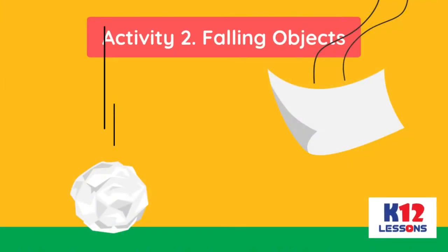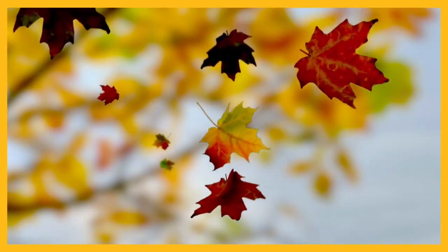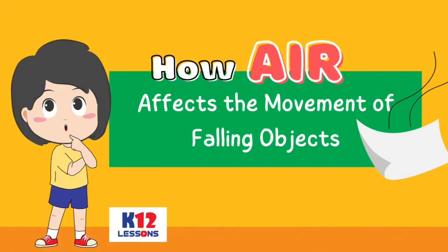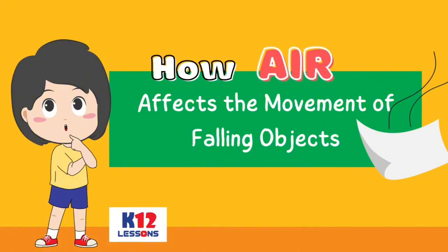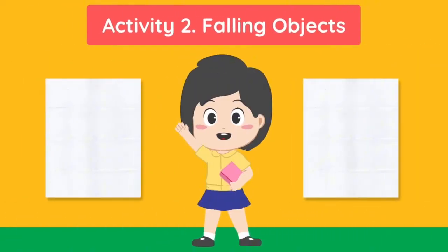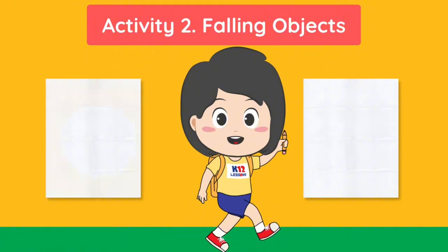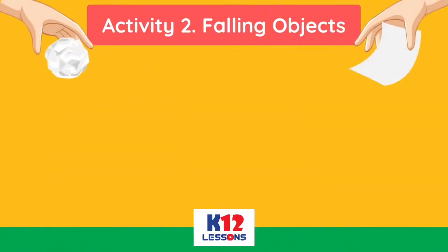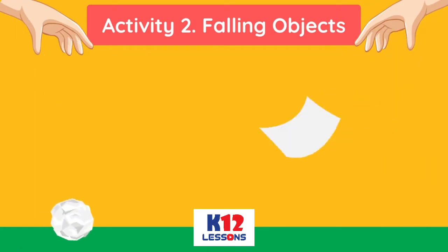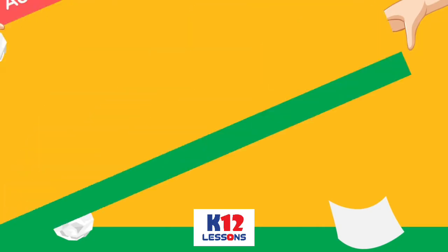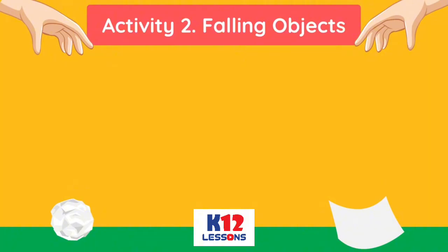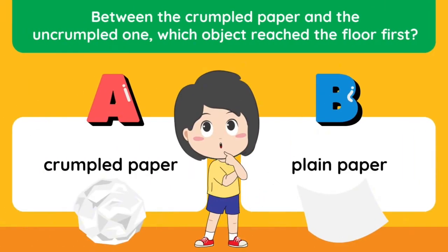Activity 2: Falling Objects. Does air affect the movement of falling objects? In this activity, you will observe how air affects the movement of falling objects. You will need 2 identical sheets of paper. Perform the activity in your room. Prepare 2 sheets of identical papers. Crumple one of the papers. Raise the 2 pieces of paper to the same height. Drop the papers at the same time. Repeat dropping the papers 2 more times and observe. Between the crumpled paper and the uncrumpled one, which object reached the floor first? A. Crumpled paper. B. Plain paper.